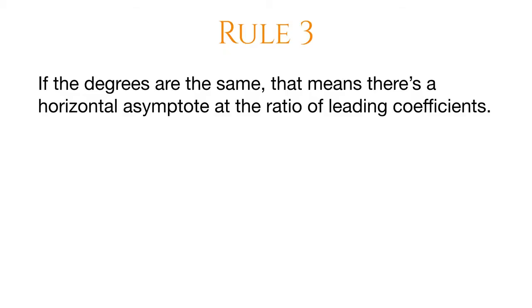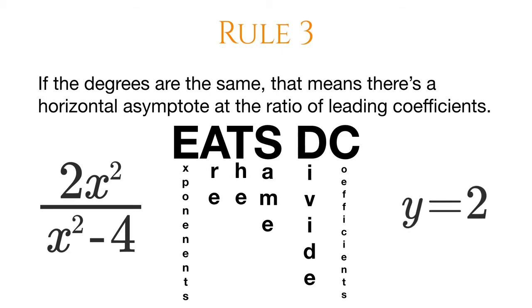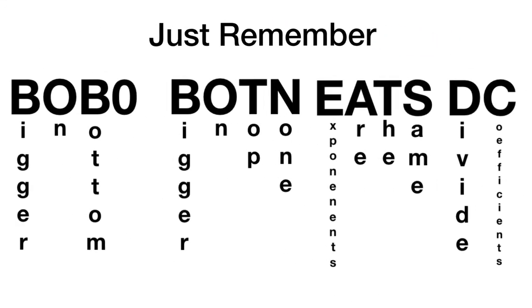Rule number 3. If the degrees are the same, that means there's a horizontal asymptote at the ratio of the leading coefficients. So if you look right here, our degrees are both squared. So as time goes on, that minus 4 isn't really going to affect much. So it just becomes 2 over 1. So our rule is eats dc. And that means exponents are the same. Divide coefficients. So exponents are the same. Divide coefficients. Meaning in this case, 2 over 1 or just 2. So just remember, Bobo Botten eats dc.